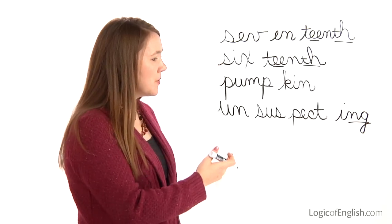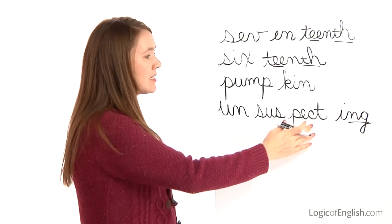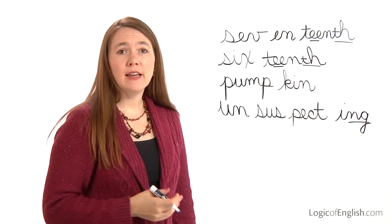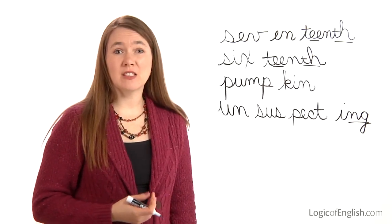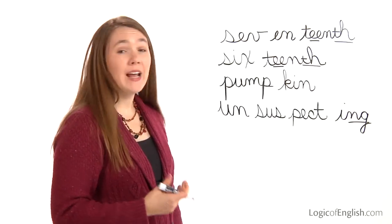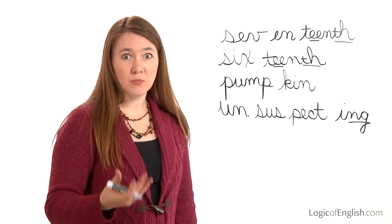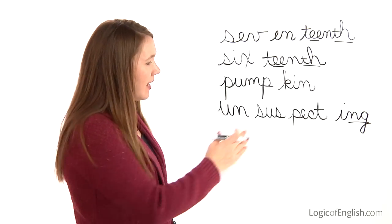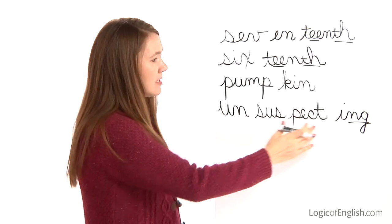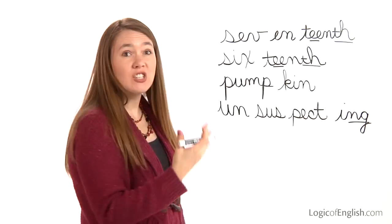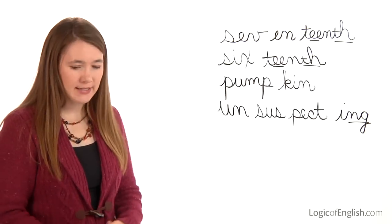What is the root of unsuspecting? It's suspect. And to suspect something means to think it's true. Or you could have a suspect in a crime — someone that they think performed the crime. And un means not. So unsuspecting means not suspecting — they weren't expecting it.